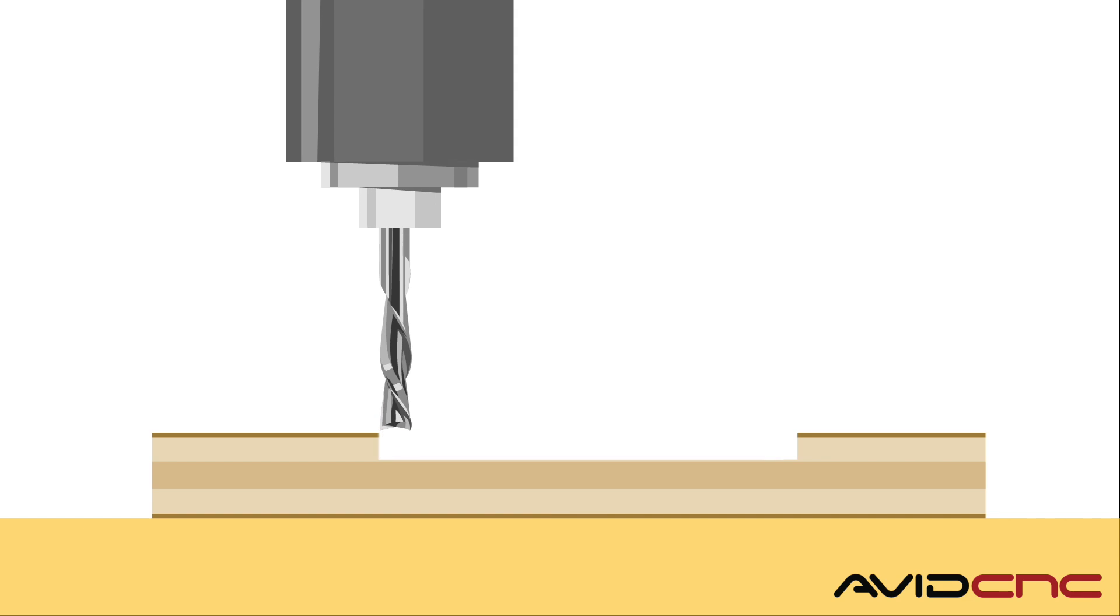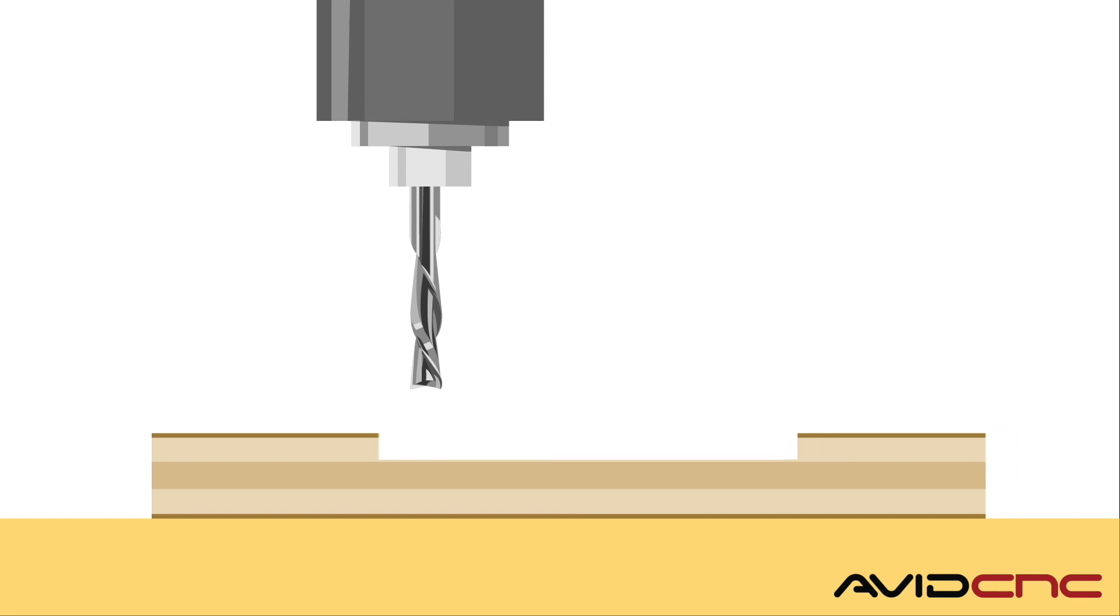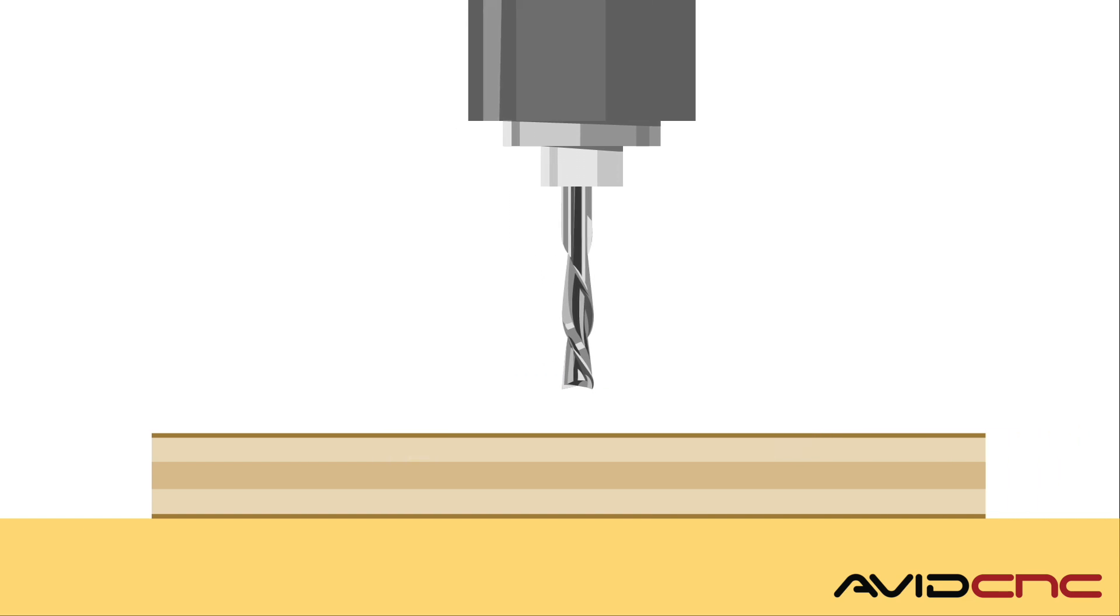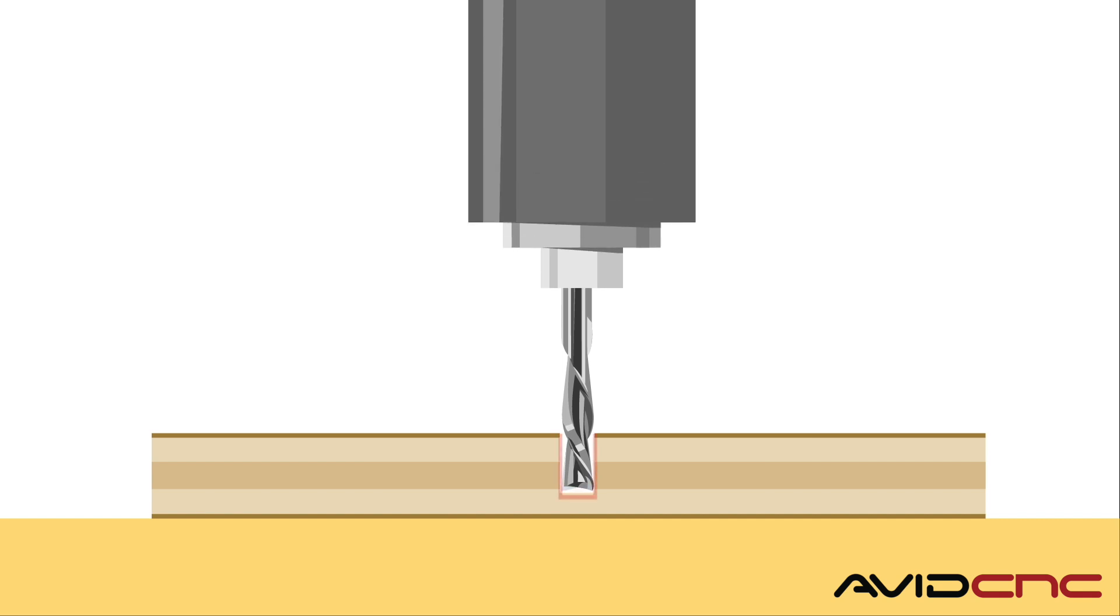Down cut bits are less ideal for machining smaller diameter holes, as the chips are forced downward into the hole, creating friction, trapping heat, and not allowing for proper chip evacuation.